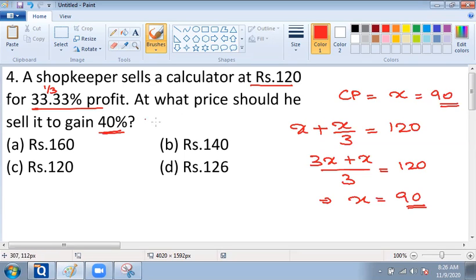So 40% profit corresponds to the multiplication factor 1.4.